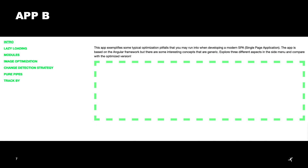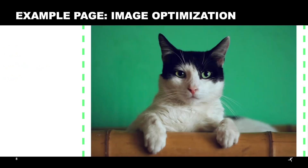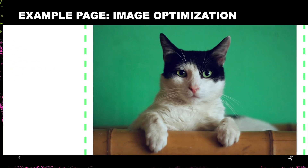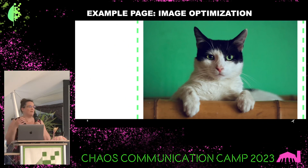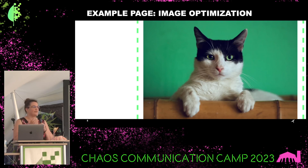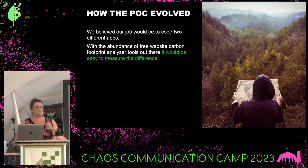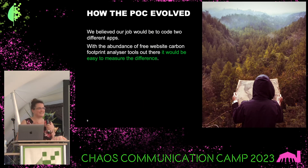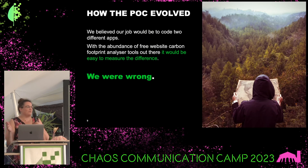For example, for the image optimization, we created a page, we put a gallery of cat pictures on there, because obviously the internet is for cat pictures. And so for each of the pages and each of the techniques that we wanted to test, we put something on there that the user could interact with during our testing. So we thought, great, we created these apps, we are done, now we're just going to do some simple tests, we're going to see the differences, and yay, we are finished. And, well, we were wrong.